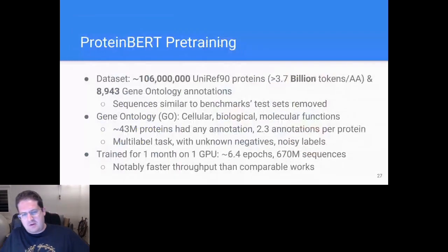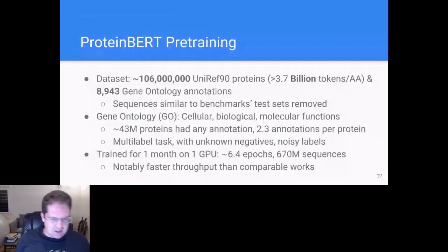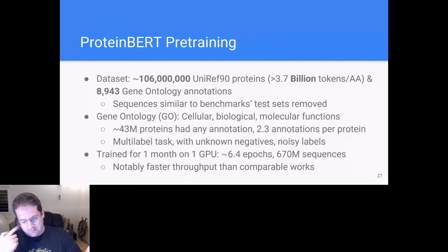Our dataset was all of UniRef90 from just before the last CAFA competition and over 100 million proteins, billions of amino acids, and about 9,000 gene ontology annotations. We kept any which had more than 50 occurrences out of all of the UniRef sequences. This included biological functions, cellular functions, stuff like cell location, molecular functions, what is the protein's property, so on. We also removed any sequences similar to the test set.